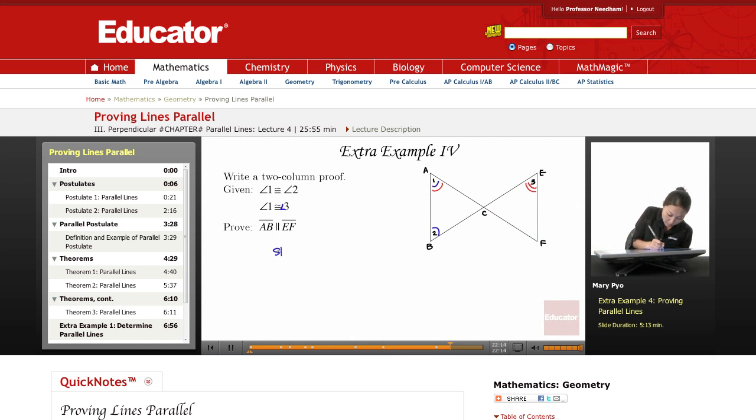So, here are my statements. My reasons, I'll put right here. So, statement number 1, we know that we have to write the given, so it's angle, let me write it a little bit higher, so I have room. So, number 1, is that angle 1 is congruent to angle 2, and angle 1 is congruent to angle 3, and the reason for this is that it's given.